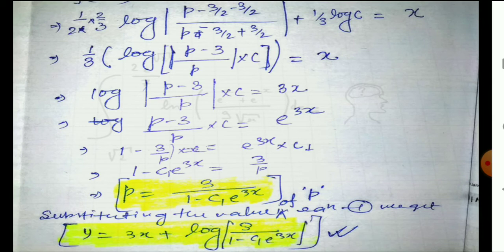Moving log to the other side gives e to the power of the expression. Dividing, we get 1 − 3p = c₁·e^(3x), so 1 − c₁·e^(3x) = 3/p, giving p = 3/(1 − c₁·e^(3x)). Now we have the value of p.